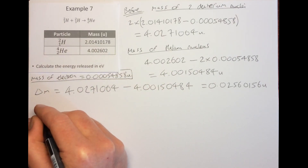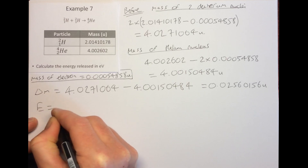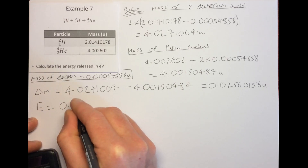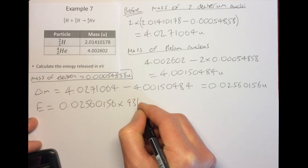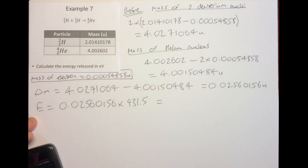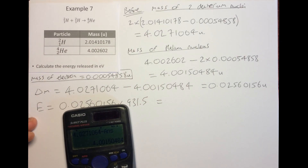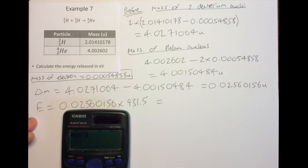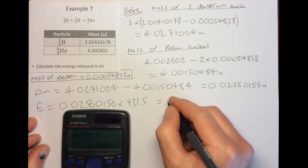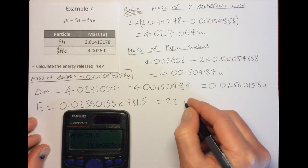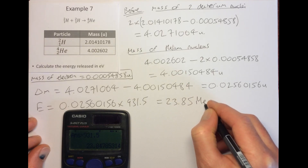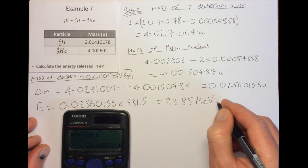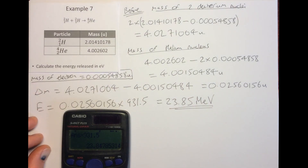The energy equivalent of that mass defect is 0.02560156 multiplied by 931.5 MeV per u. Multiplying that out gives us 23.85 MeV. That is the energy released when two deuterium nuclei fuse together to make a helium nucleus.